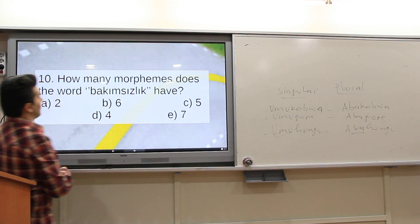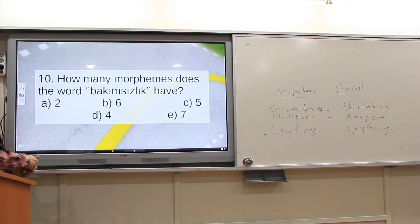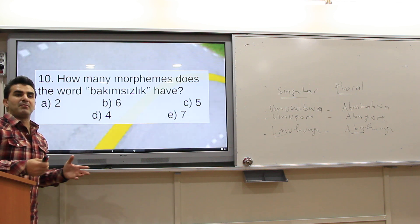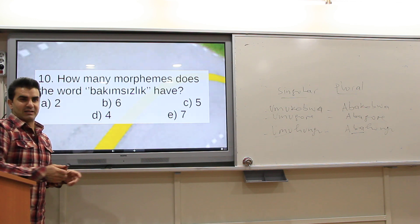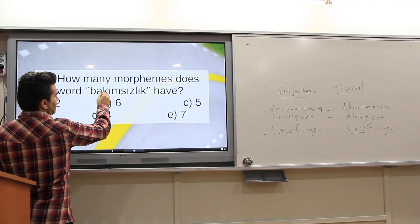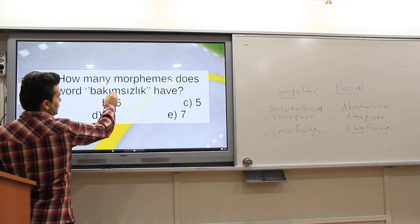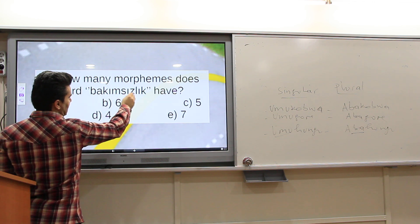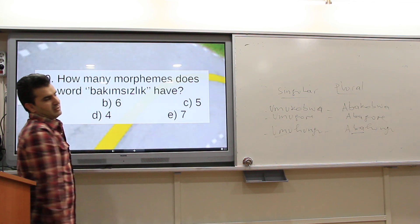How many morphemes does the Turkish word 'bakımsızluk' have? Let's check: bak — one; bakım — two; bakımsız — three; bakımsızluk — four morphemes.